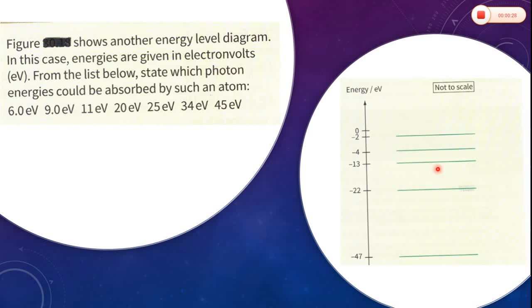Now, based on the idea of energy levels, we will calculate the energy between each transition by taking the difference of energies here labeled here. Though this diagram is not to scale, but we need to calculate the magnitudes of the energy only because energy is a scalar quantity. So it doesn't matter if it's to scale or not to scale.